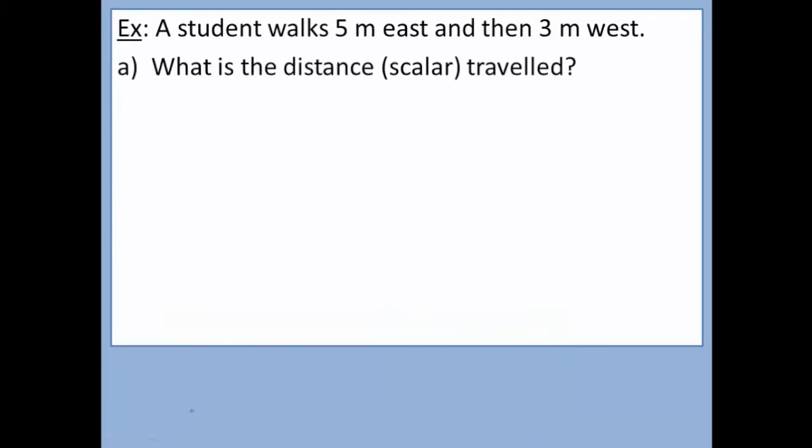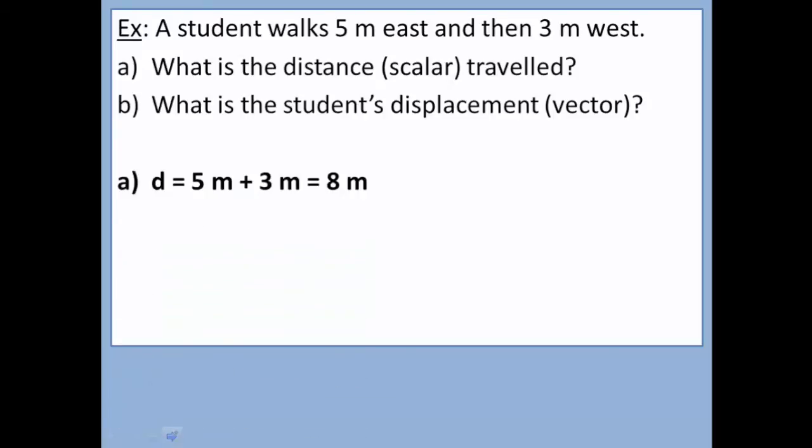Let's take a look at an example where we actually have to deal with the difference between scalar and vector. A student walks 5 meters east and then 3 meters west. We're going to ask: what is the distance traveled, and what is the student's displacement? For part A, we're just talking about the value, how far the student actually walked. They traveled 5 meters somewhere and then 3 meters somewhere else. So we add up the distances. They traveled a total of 8 meters. Because it's a scalar, we don't care which way they went so far as they traveled 8 meters.